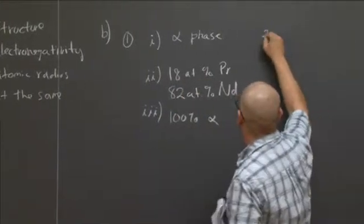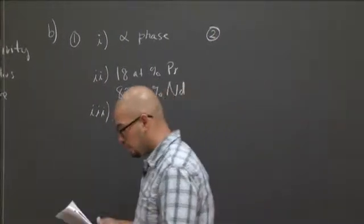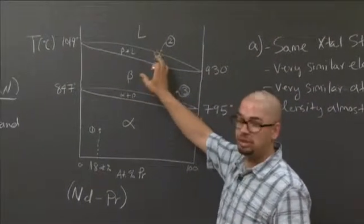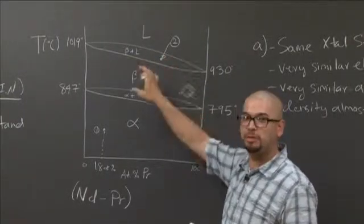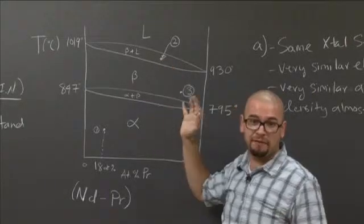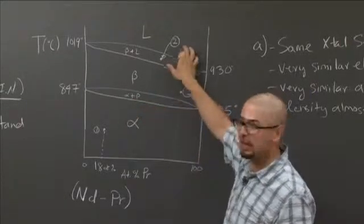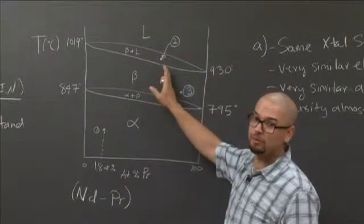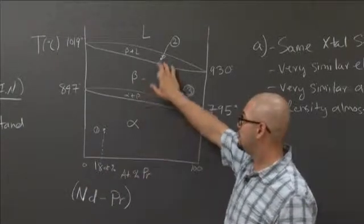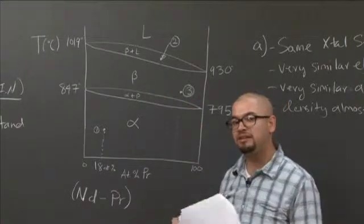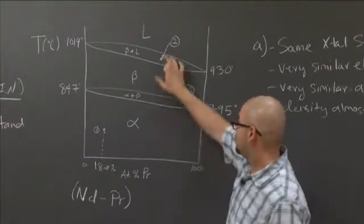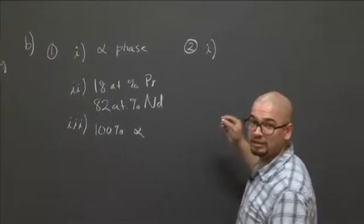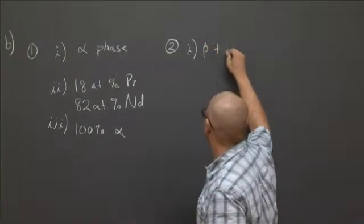For the second point that we're going to analyze in our phase diagram, you'll notice that now we lie in between two phases — in the lenticular region. So here, I don't have pure beta or pure liquid; I have a combination of both beta and liquid. This is exactly where you need to apply the lever rule. You can't apply the lever rule when you have a pure phase — you can only apply it when you're in a region where two phases coexist in equilibrium. So analyzing Part II, the phases that are present are beta and the liquid phase.